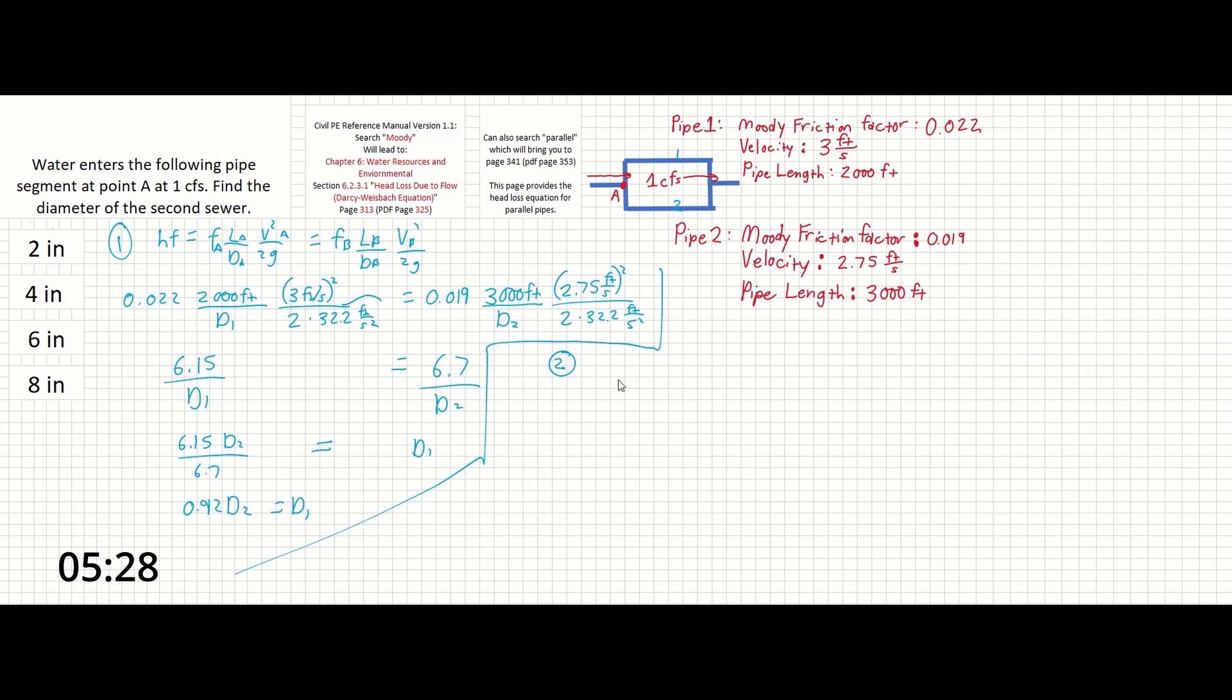And this equation right beneath it in the manual shows that pi d squared over 4 times v d2 equals pi d2 equals pi d2 a squared over 4 times v a plus pi db squared over 4 times v db.